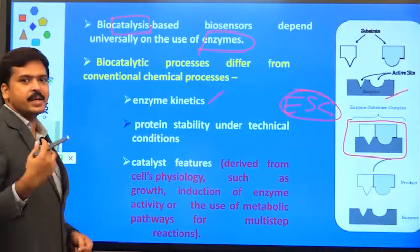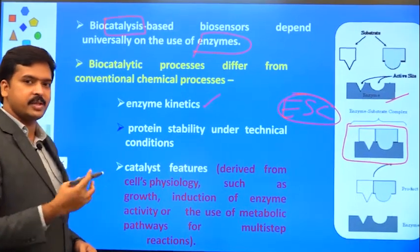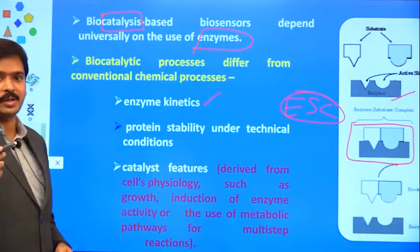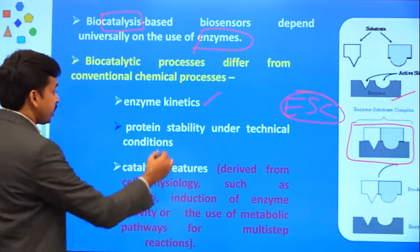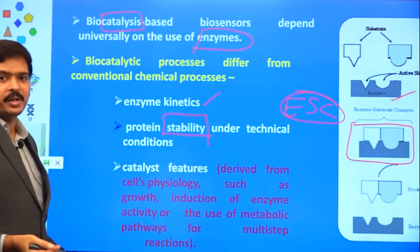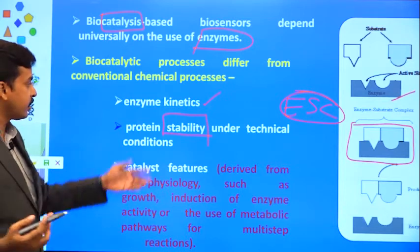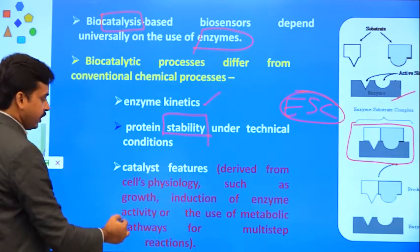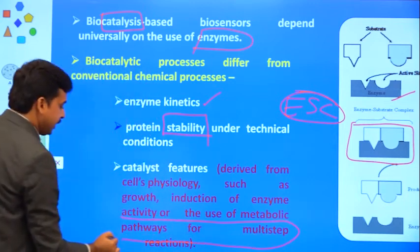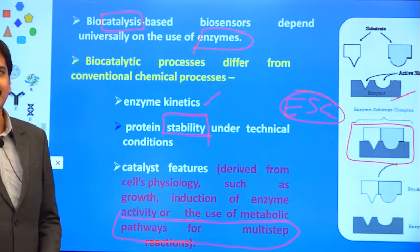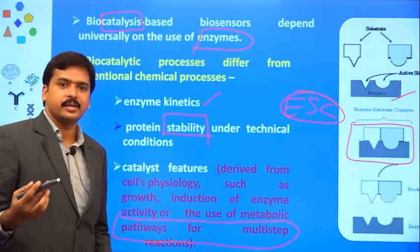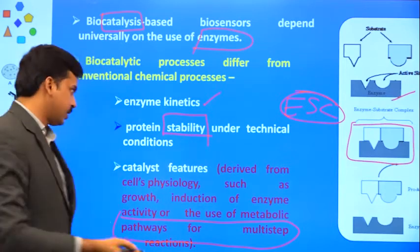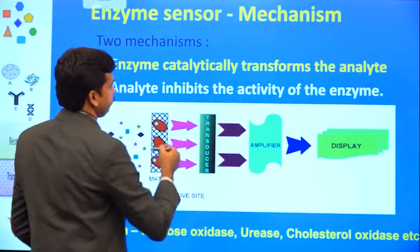Enzyme kinetics — inside the body, the rate of reaction in the presence of enzyme is at one level, but whether the same level is maintained outside needs to be considered. Concentration fluctuations must be accounted for when designing. You also need to consider how stable the enzyme is at room temperature — if the biosensor temperature increases, does the enzyme lose its activity? Additionally, enzyme activity may use single steps or multiple steps, since a single step may not always give a prominent result. Recently, biocatalysis-based biosensors are being prepared with multiple enzymes.